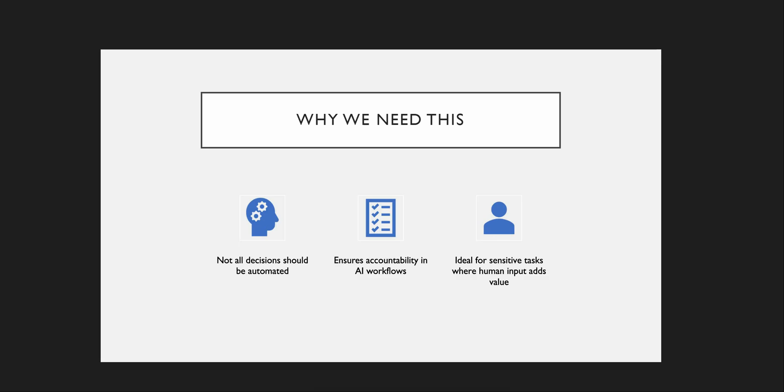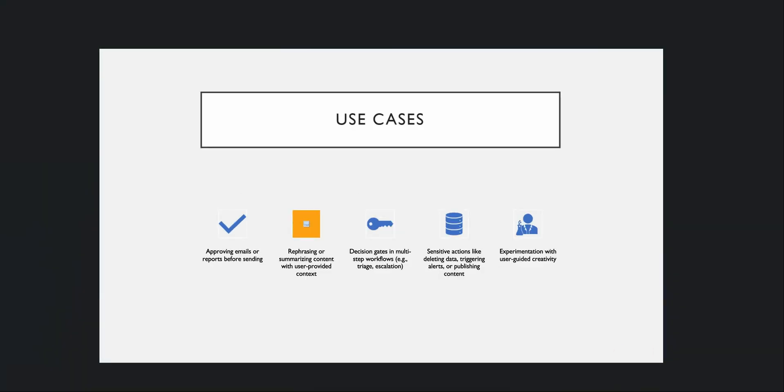This feature is ideal for sensitive, high-stake, or creative tasks where human input adds more value than relying completely on the agent. Here are the common use cases. First, when you're sending a report to a large number of people, you cannot simply rely on the agent — you want to review it before sending those emails. Second, when rephrasing or summarizing content that requires a human touch. Third, decision making in multi-step workflows, whether you want to triage something or escalate something.